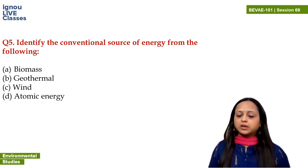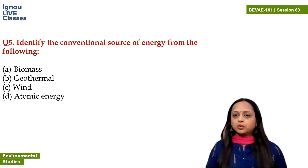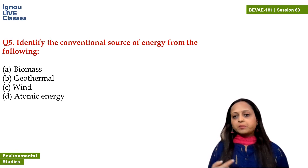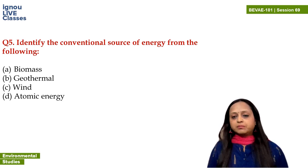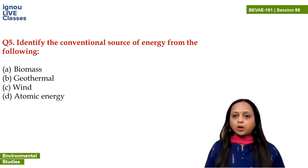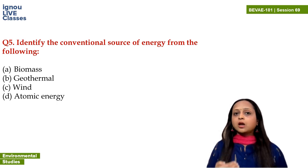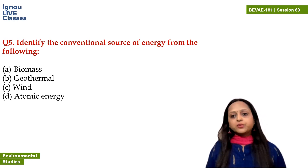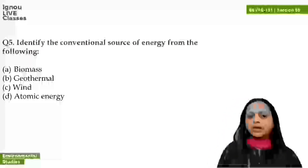Atomic energy, also called nuclear energy, is obtained from nuclear radioactive elements. We use uranium-235 for nuclear energy. However, radioactive elements like uranium-235 are not renewable — so atomic energy, out of these four options, is the conventional source of energy and a non-renewable resource. The answer is D.